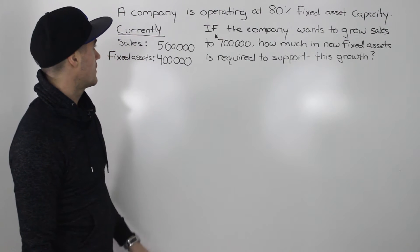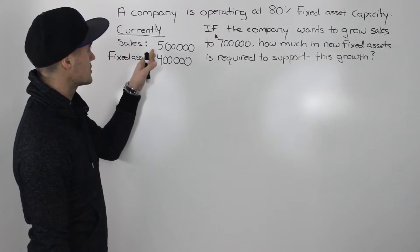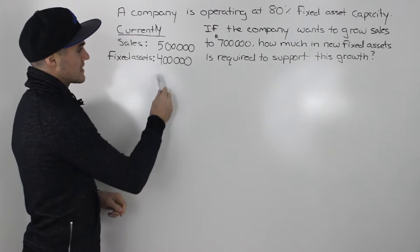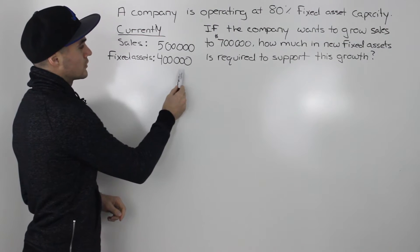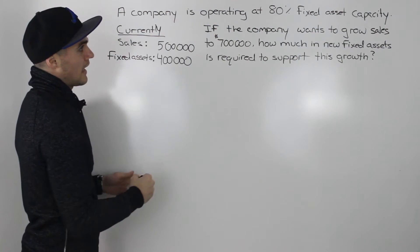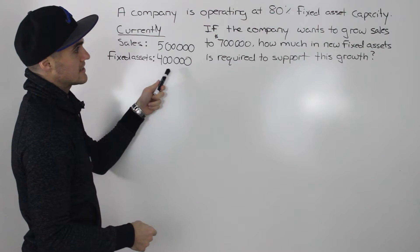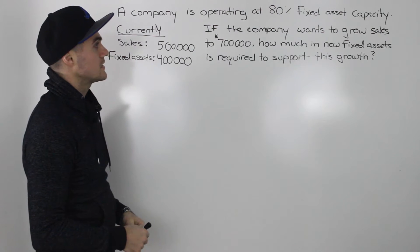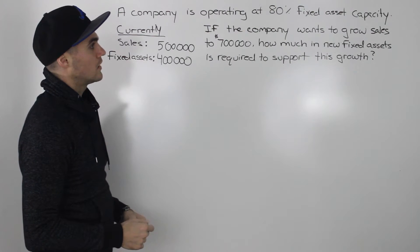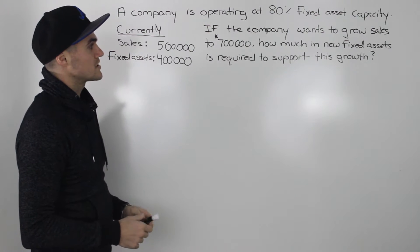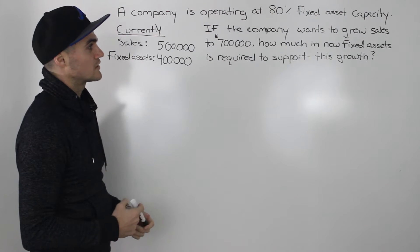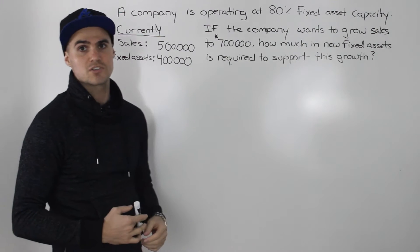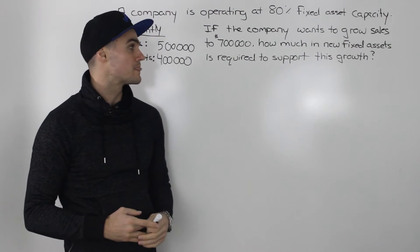We have a company that has current sales of $500,000 and fixed assets of $400,000. The fixed assets are operating at 80% of their capacity. If the company wants to grow sales to $700,000, how much new fixed assets is required to support this growth?